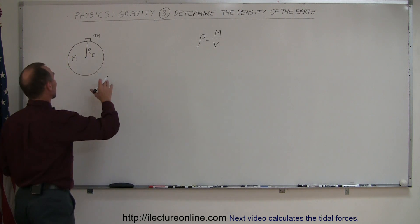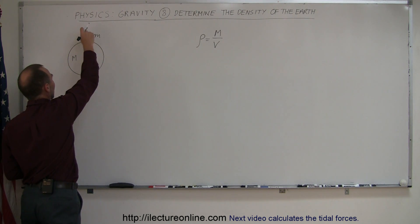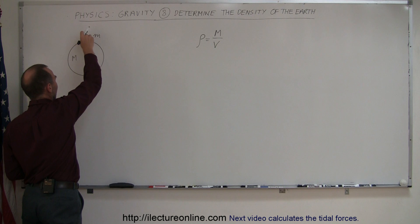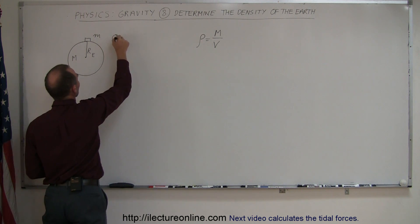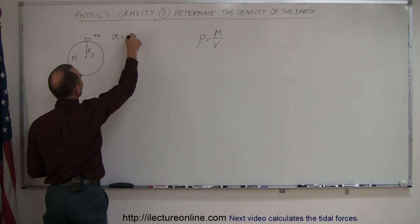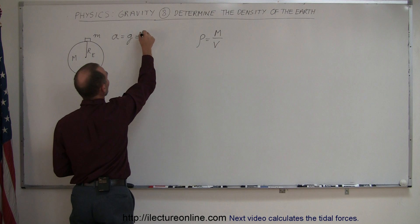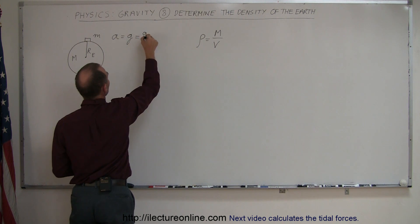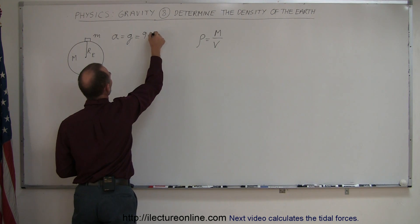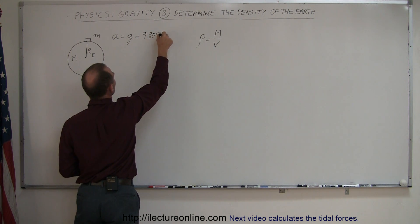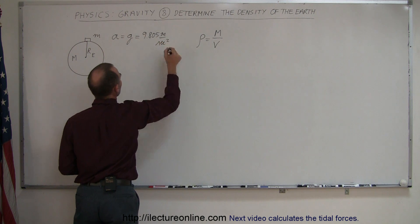When we drop an object above the Earth's surface and it comes down, we can measure the acceleration to be equal to g. And when we experimentally measure that, let's say we came out to be 9.805 meters per second squared.